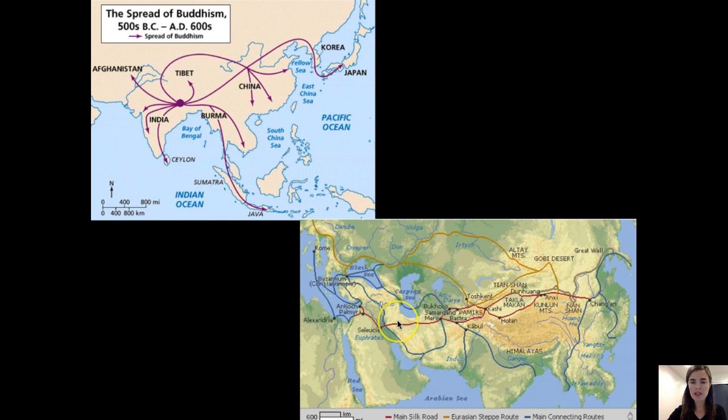We'll start off thinking about Buddhism moving into Afghanistan at the trading route of Bamiya, and then spend most of the video thinking about how Buddhism became established in China. You can see from this map how it is moving from northern India to the area of Afghanistan, into Southeast Asia, into China, and eventually into Korea and Japan. The next video will think about how Buddhism is adopted in Korea and Japan and what the art looks like.